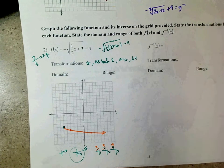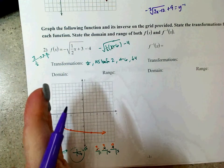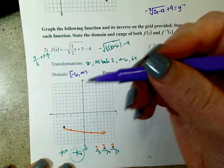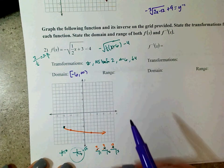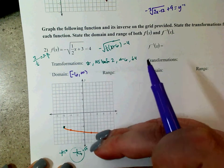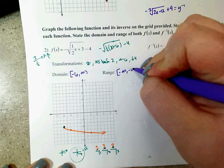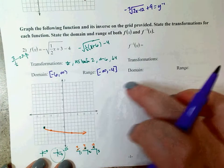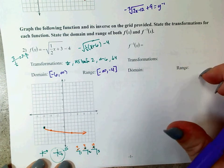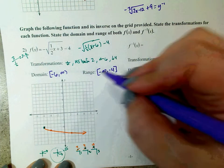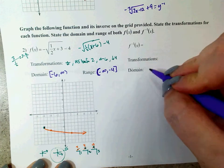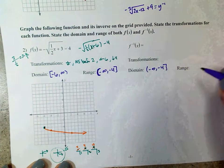As far as domain and range: domain is how far left and right it goes — from negative 6 all the way to infinity. Range is how low and high it goes — it exists all the way down to negative infinity, but the highest it goes is negative 4. So range is negative infinity up to negative 4. I should know that domain and range of my inverse flip and become the range and domain of the inverse. So the range here becomes the domain: negative infinity to negative 4. And the range is the old domain: negative 6 to infinity.